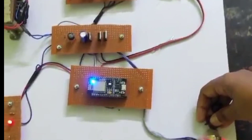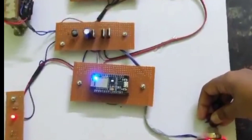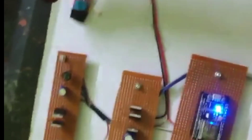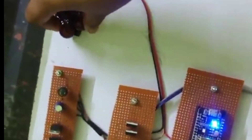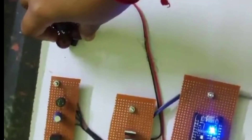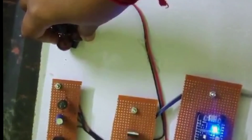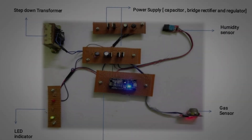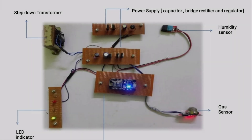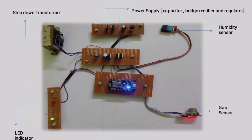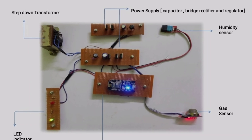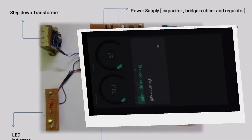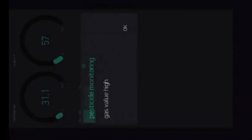When the gas level exceeds the value of 110, we will get a notification on mobile as 'gas value high.' Thus, we can conclude that the amount of pesticides is high for this product, and the red LED will glow. When the humidity level is greater than 59, we will get a notification on mobile as 'high humidity.'